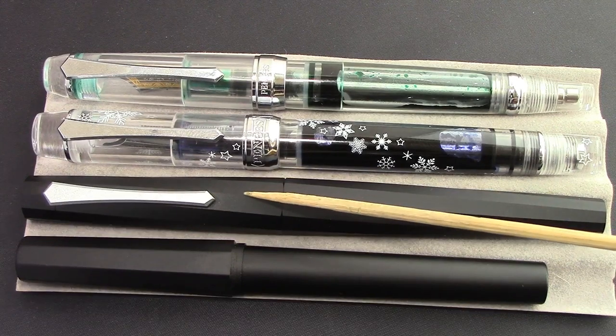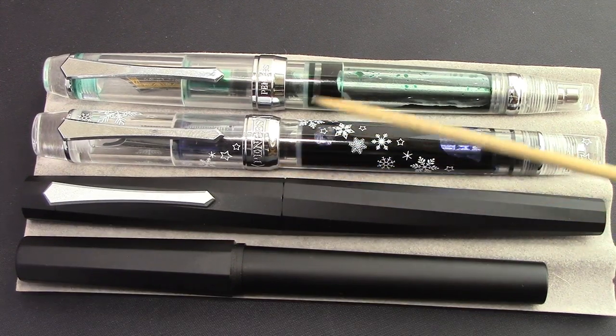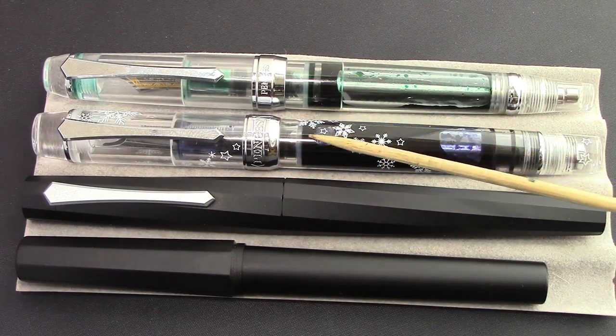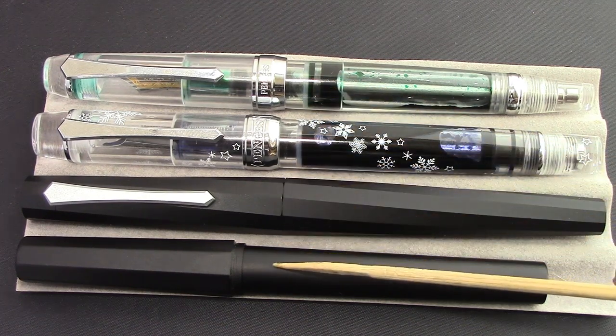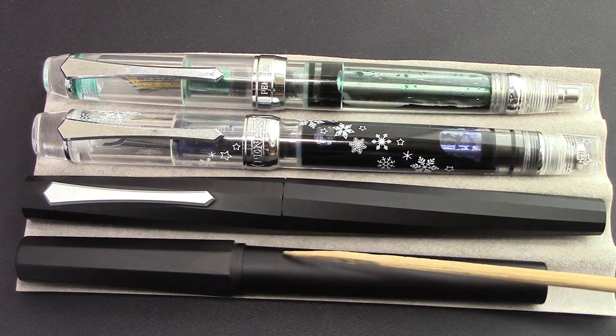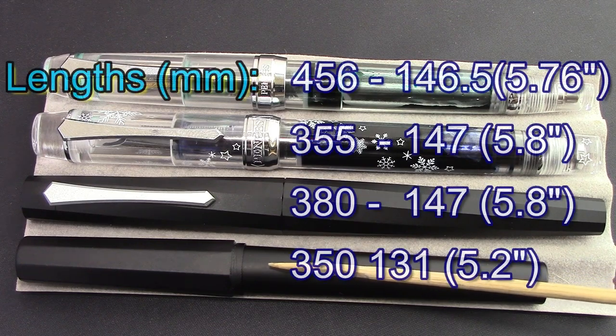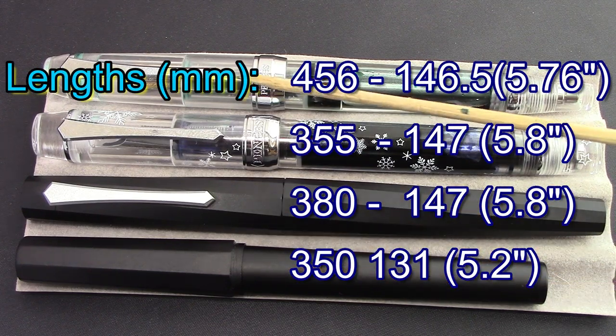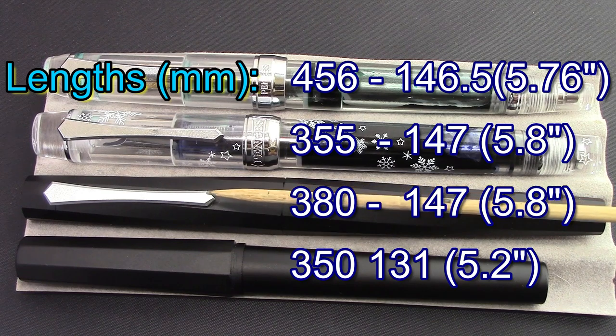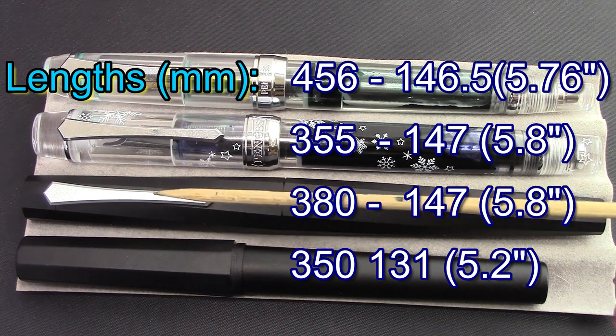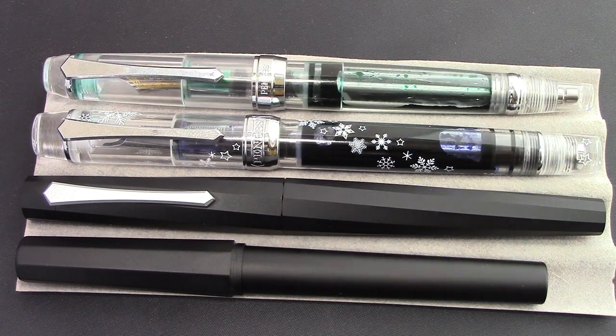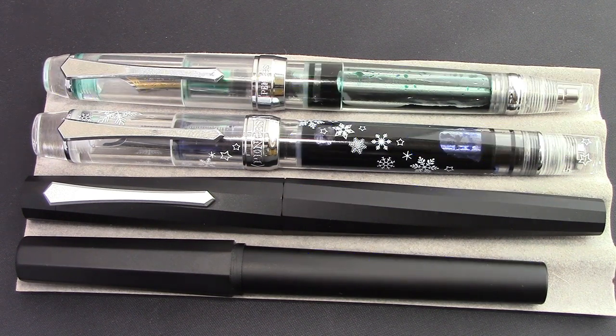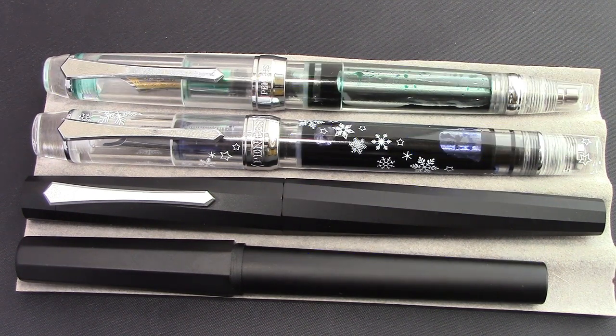Here we have the 380 alongside some of its peers, the 355, the 456, and the original aluminum pen that PenBBS did, the 350. So these three share in common the sword clip. But on the 380, it's kind of a matte finish, which I think is really nice and adds to the attraction and also goes well with the pen.